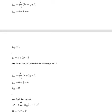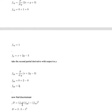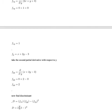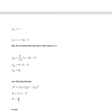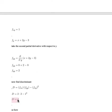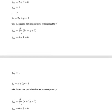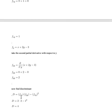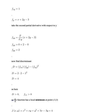The discriminant is given by D = fxx · fyy - (fxy)². Here fxx = 2, fyy = 2, and fxy = 1, so D = (2)(2) - (1)² = 4. Since D = 4 is positive, and fxx = 2 is also positive, both conditions confirm a local minimum.